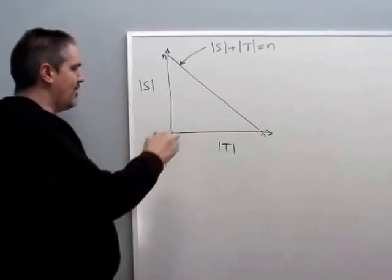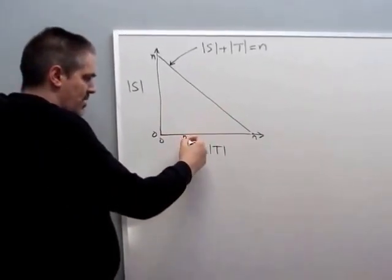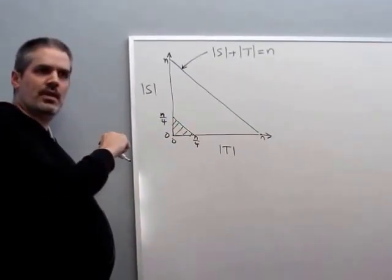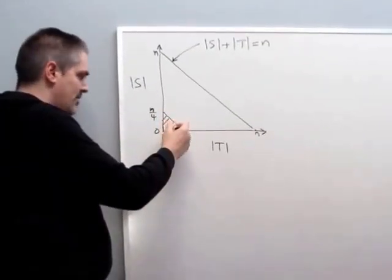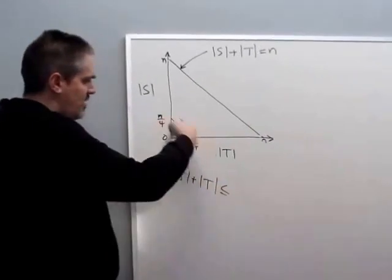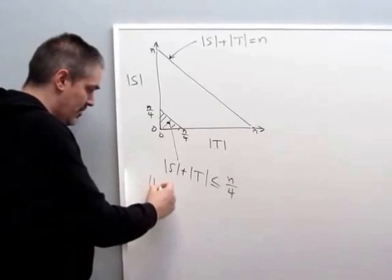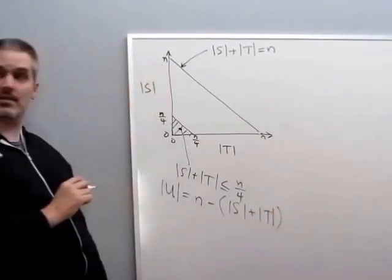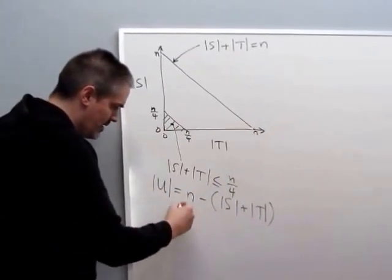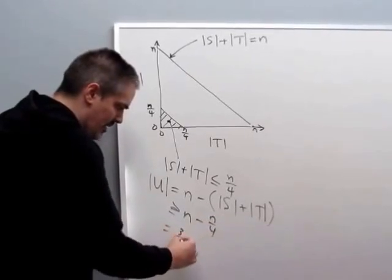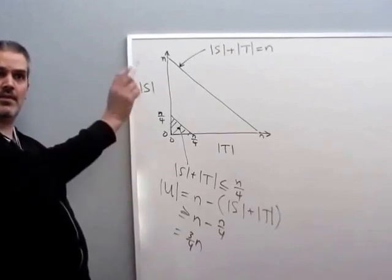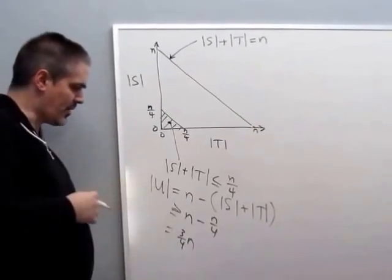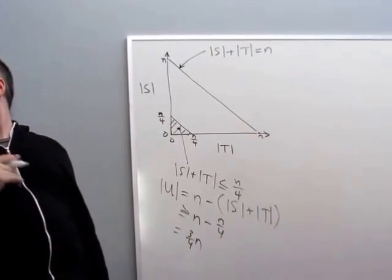Notice that if we ever get into this corner region — where S plus T is less than n/4 — then U, the number of things in U, equals n minus S minus T. If S+T is less than n/4, then U is greater than 3n/4, which is a linear function of n. All the nodes in U at the same time are all in the same connected component — because we do one component at a time — so those 3n/4 nodes are in the same connected component. That's enough to prove there's a connected component of that size.